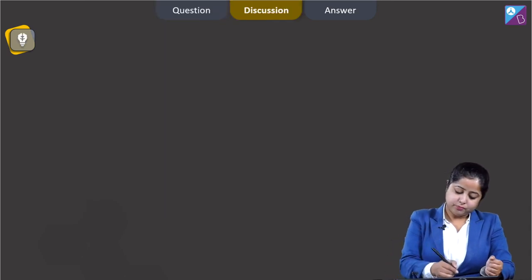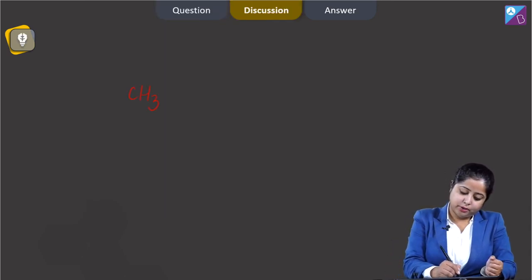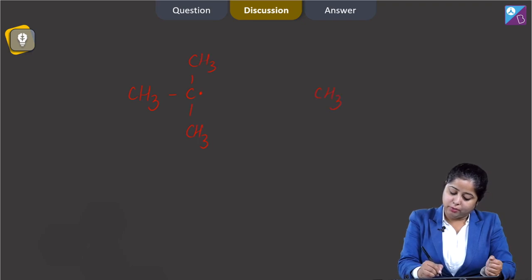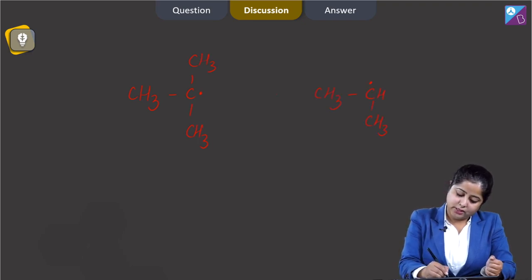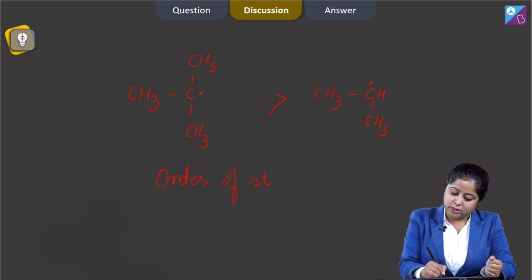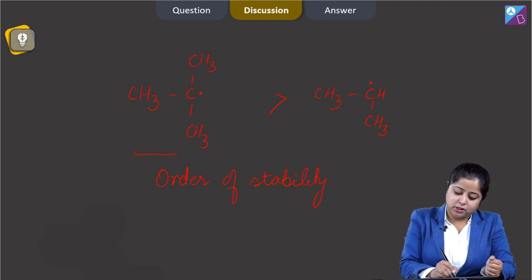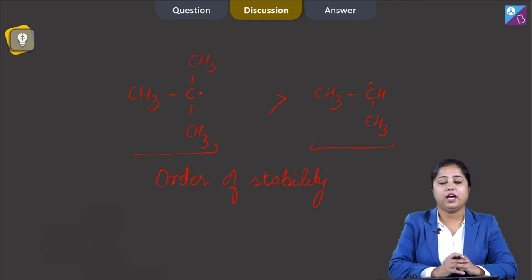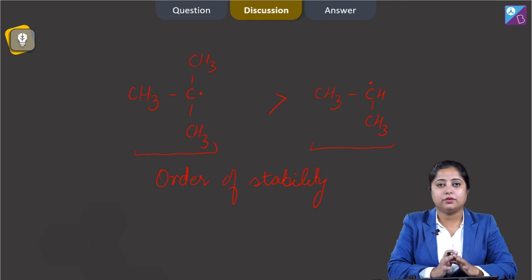We are talking about the tertiary butyl free radical, which is more stable than the secondary butyl free radical. Comparing the stability of these two, the tertiary butyl free radical is more stable than the secondary butyl free radical, and we have to answer the reason for this order of stability.